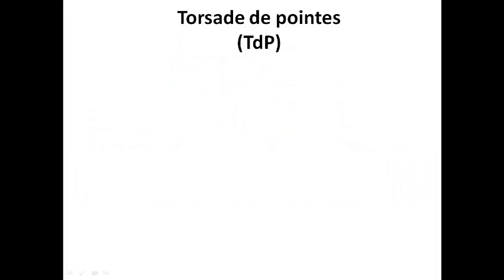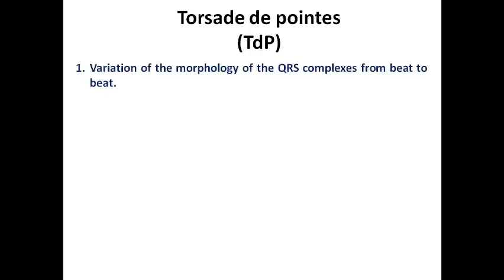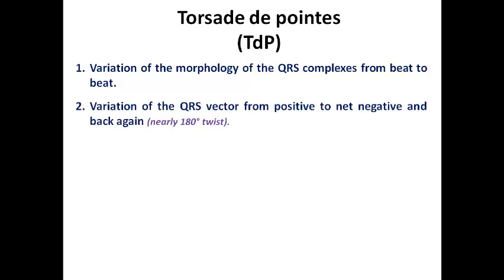The ECG criteria of Torsade de Pointe — abbreviated TdP — are as follows. Number one: variation of QRS complex morphology from beat to beat, with continuous and rapid change. Number two: variation of the QRS axis or vector from positive to negative of about 180 degrees and back again. Number three: heart rate ranging from 150 and may exceed 200 beats per minute, sometimes up to 250 bpm, which explains why it is a very malignant form that can degenerate into VF.